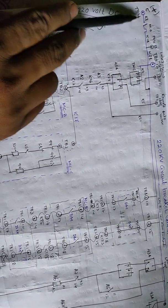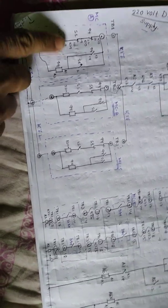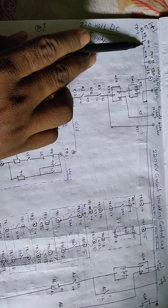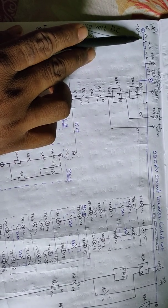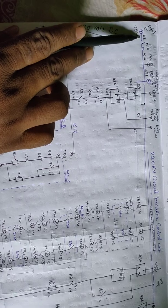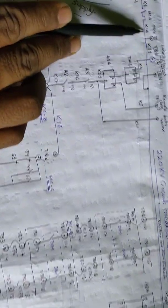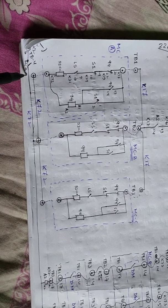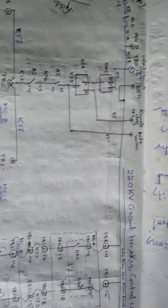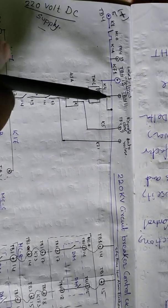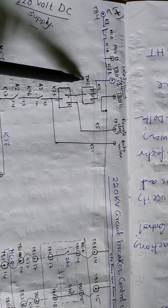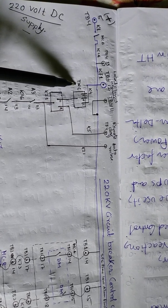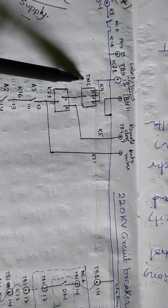We are using here the 220 volt DC supply. This is the positive terminal K1 and this is the negative terminal K2. By help of an MCB, we are just providing the power from K1 contact to K1A contact and K2 contact to K2A contact. This is the TNC switch - Trip, Neutral, Close.